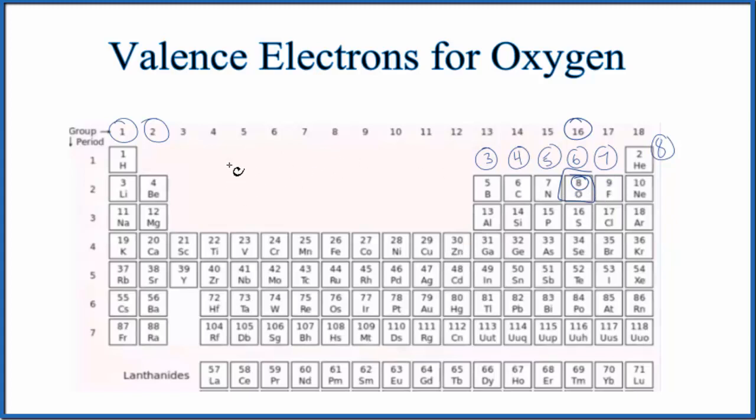So if we write the configuration, we have 1s2, that shell's full. We go to 2s2. We've used four electrons. So for the 2p, we can put four in there. 2 plus 2 is 4, plus 4, that's 8.